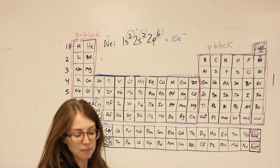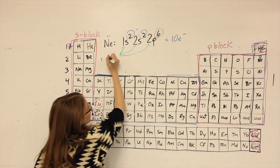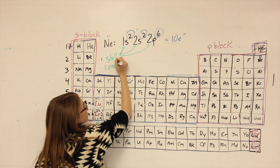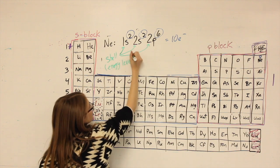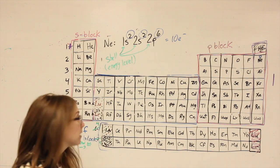What the numbers up front mean, they represent the coefficients, represent the shell, which is sometimes called the energy level. The S and the P, we call those subshells.